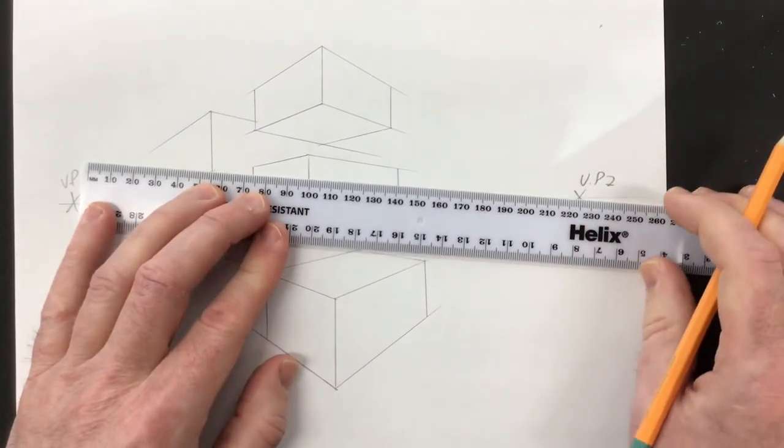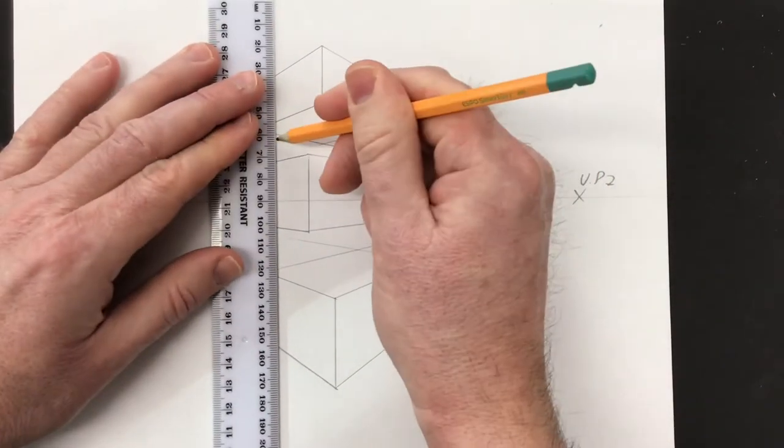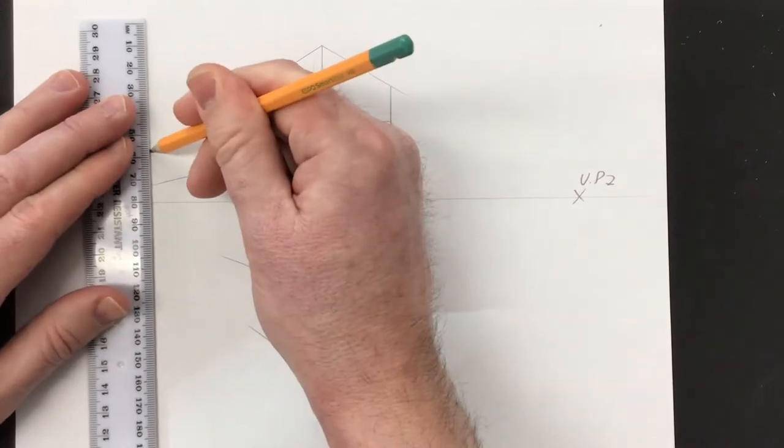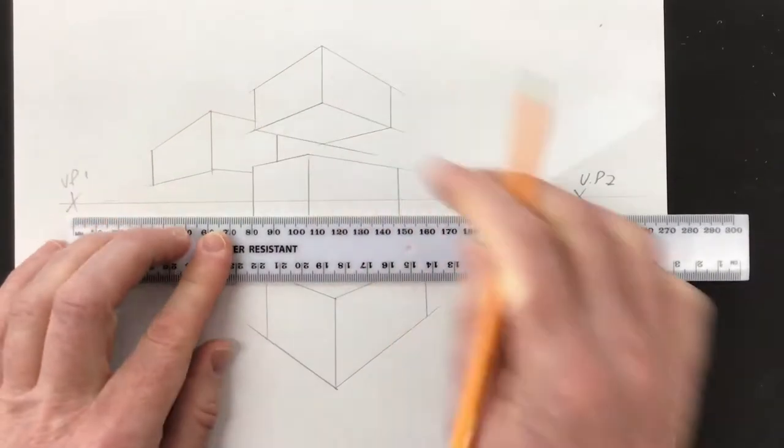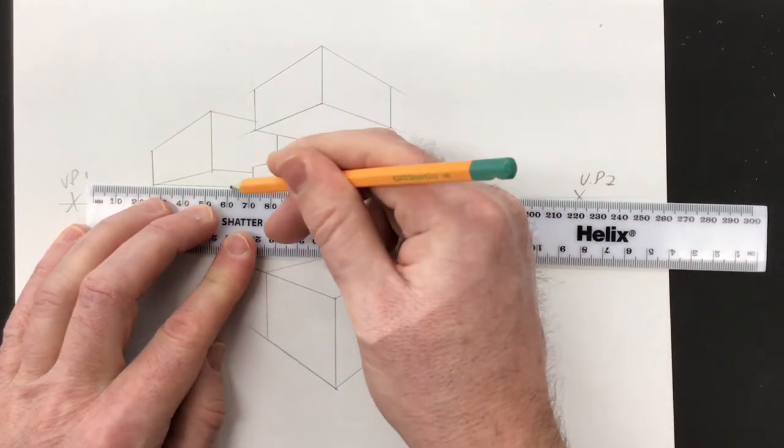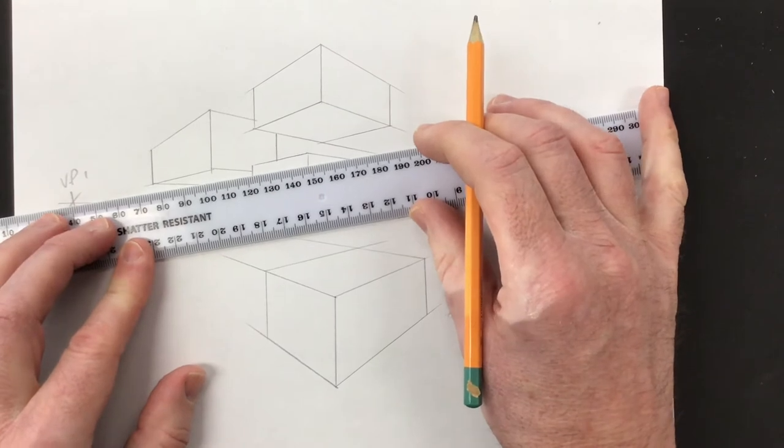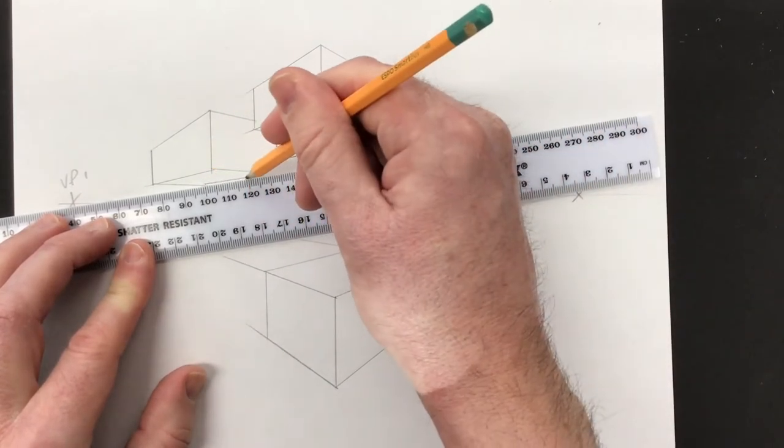Can you see how this is building? Look at the illusion of depth and it looks now as if this cube is behind that one. And that's just a question of repeating this process a number of times until you fill the space.